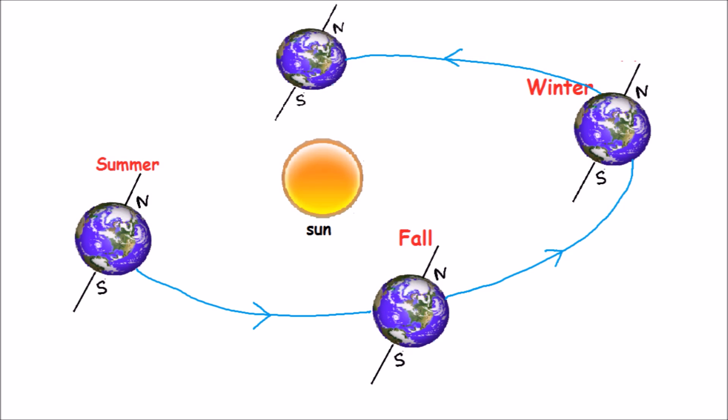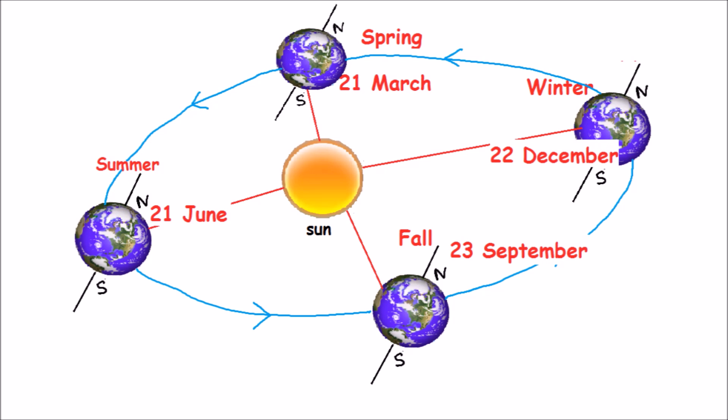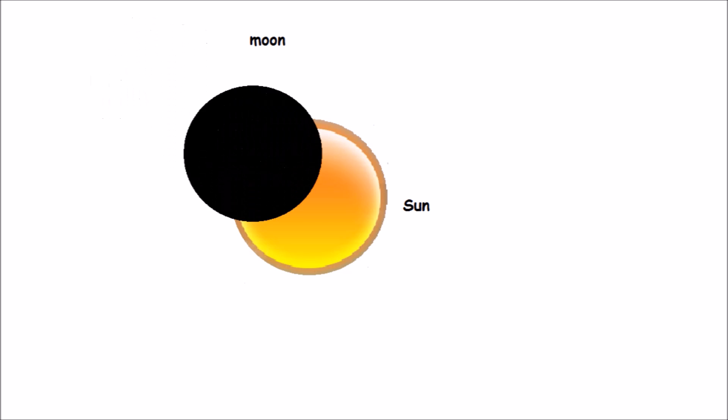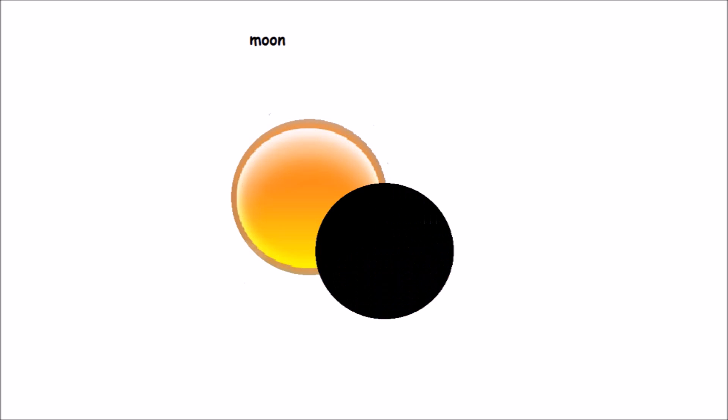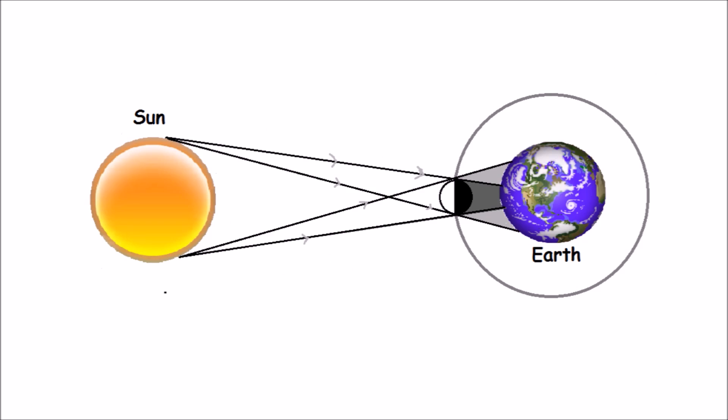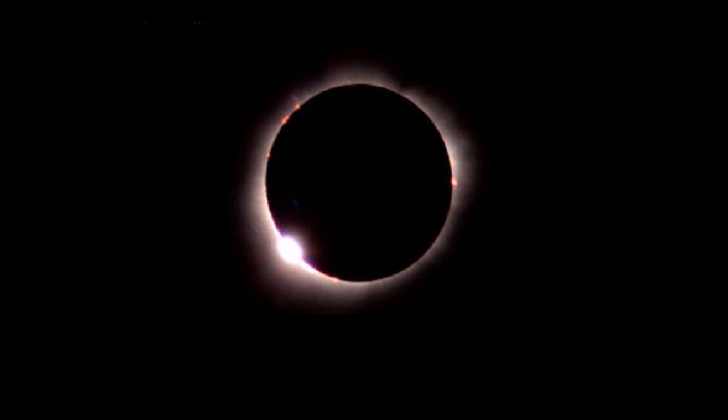When the top part of Earth begins to tilt toward the Sun, it is spring. A solar eclipse occurs when the moon passes between Earth and the Sun. The moon blocks sunlight from reaching some parts of Earth, causing the moon to make a shadow on that part. This is how the Sun looks during a solar eclipse from Earth.